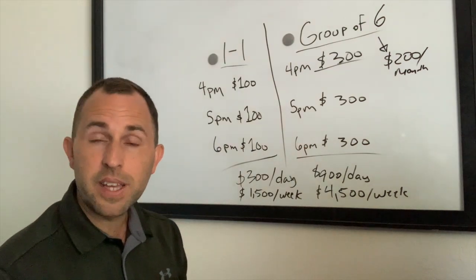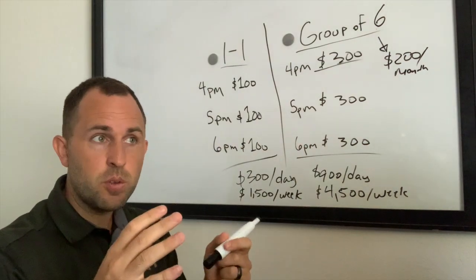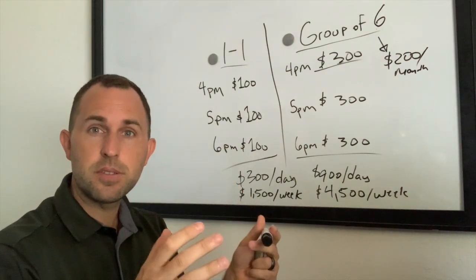If we multiply that times four weeks, you're making $18,000 per month with this model. That's assuming at that point you have groups and the goal is to fill each group with six kids.